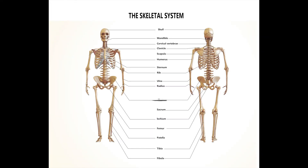Let's learn the bones required at Level 2. At the top, we have the cranium, which protects the brain, and the mandible, or jaw bone. The vertebral column is split into five sections: cervical, thoracic, lumbar, sacrum, and coccyx. Then we have the clavicle, or collar bone, and in the upper back the scapula, or shoulder blades. The humerus is the bone in the upper arm. In the forearms we have the radius and ulna. The wrist bones are carpals, hand bones are metacarpals, and fingers are phalanges.